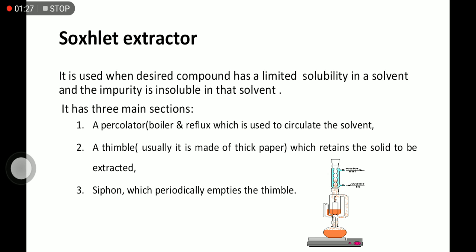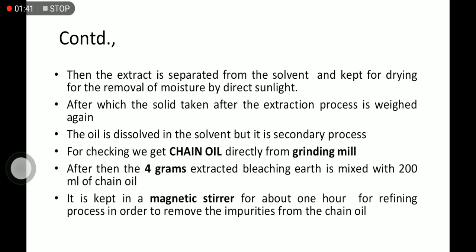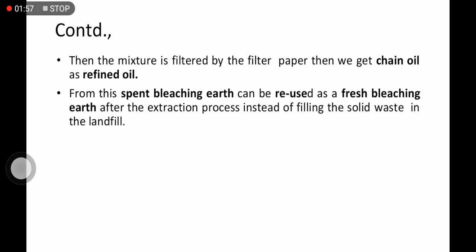This is the Soxhlet extractor apparatus we used for this process. The methodology involves taking 20 grams of spent bleaching earth collected from a local oil industry. The experiment is done by Soxhlet extractor using hexane as solvent, 200 ml. The oil is dissolved in the solvent as a secondary process. For checking, we get crude oil directly from the grinding mill. Then 4 grams of extracted bleaching earth is mixed with 200 ml of crude oil. It is kept in the magnetic stirrer for about 1 hour for refining process in order to remove the impurities from the crude oil.